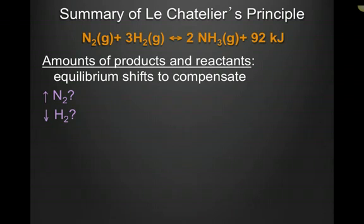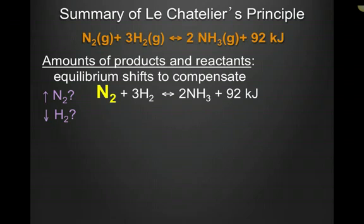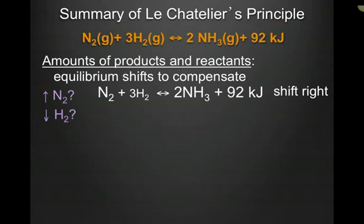Let's do a quick summary. What happens if I change the amount of products and reactants to a system at equilibrium? If I change the concentration, the equilibrium must shift. In the first example, what happens if I increase the amount of nitrogen? If I increase the amount of nitrogen, the equilibrium has to shift to get rid of it — the equilibrium shifts to the right. That means ammonia increases and hydrogen decreases. A shift to the right is favoring the forward reaction.